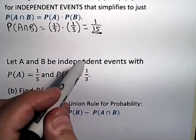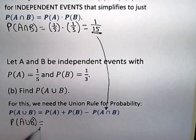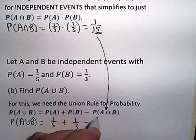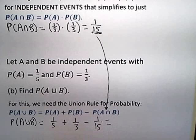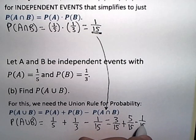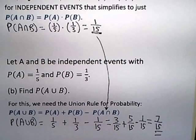We already calculated the probability of A intersect B. So the probability of A union B is the probability of A, which is one-fifth, plus the probability of B, which is one-third, minus the probability of A intersect B, which is one-fifteenth. Converting to a common denominator: one-fifth is three-fifteenths, one-third is five-fifteenths, minus one-fifteenth. Three plus five is eight, eight minus one is seven, so we get seven-fifteenths. The probability of A union B is seven-fifteenths.